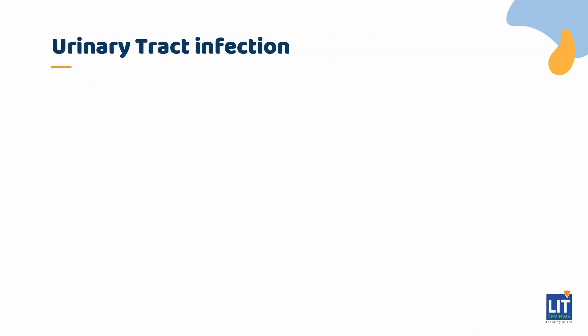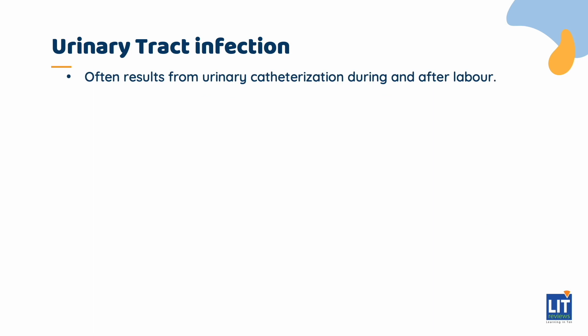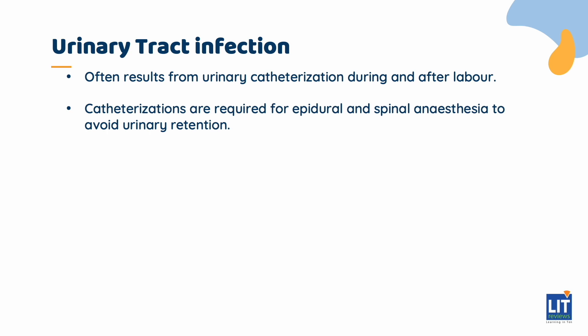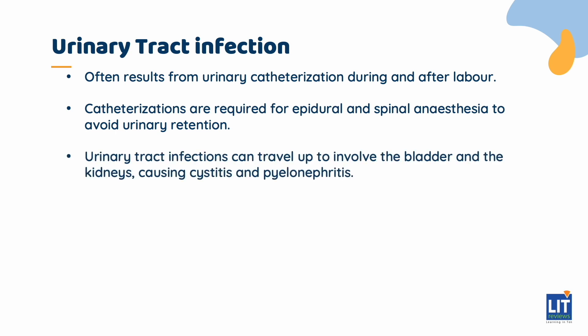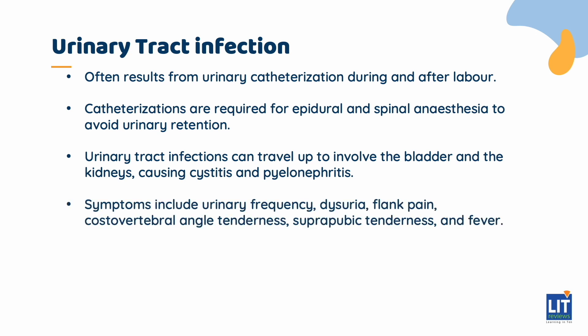Urinary tract infections often result from urinary catheterization during and after labor. Catheterizations are required for epidural and spinal anesthesia to avoid urinary retention. Urinary tract infections can travel up to involve the bladder and the kidneys, causing cystitis and pyelonephritis. Symptoms include urinary frequency, dysuria, flank pain, costovertebral angle tenderness, suprapubic tenderness, and fever.